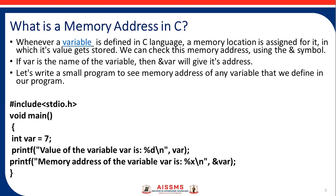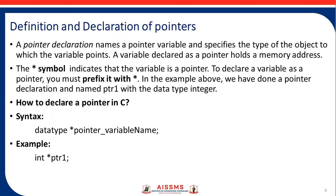Let's write a small program. For example, #include<stdio.h> - it is a header file. That is, #include is a preprocessor and stdio.h is standard input output header file. Then void main(), and here we define an integer type variable var = 7. Then, print the value of the variable var, which is 7, and then print the memory address of that variable, that is &var.